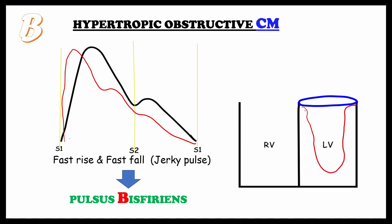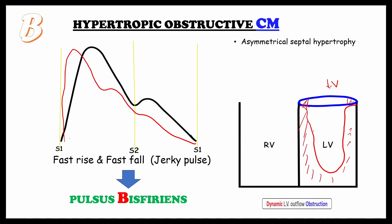In the left ventricle we can see hypertrophy of the myocardium, which causes narrowing of the outflow tract and decreases the velocity of blood flow. We will see asymmetrical septal hypertrophy, which indicates dynamic left ventricular outflow obstruction. This represents subvalvular aortic stenosis.